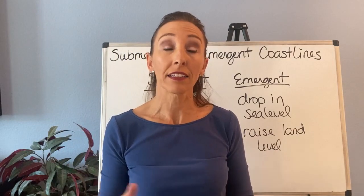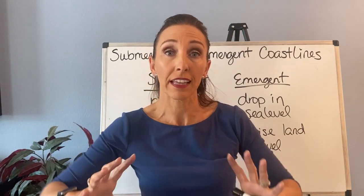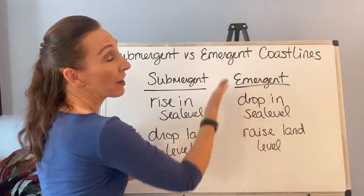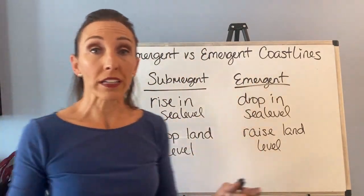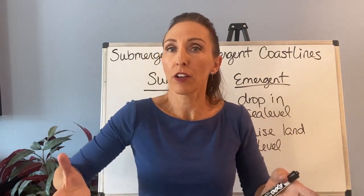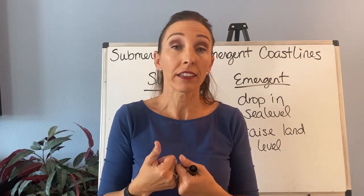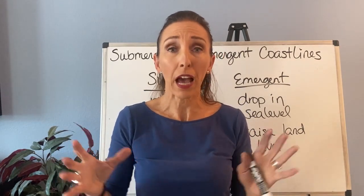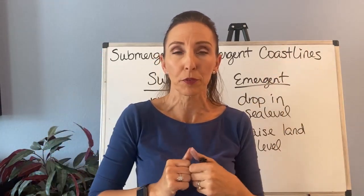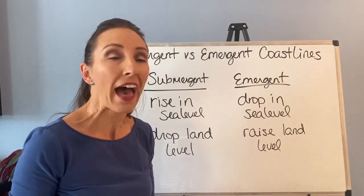When it comes to changing land level, tectonics can do that. If you have compression and land is getting lifted up, you can have an emergent coastline. Or even as polar ice caps melt, we have this thing where the crust actually bounces back out of the asthenosphere — isostatic rebound. When that happens, the land level rises back up because all the weight of the ice has been removed, and again you have an emergent coastline.